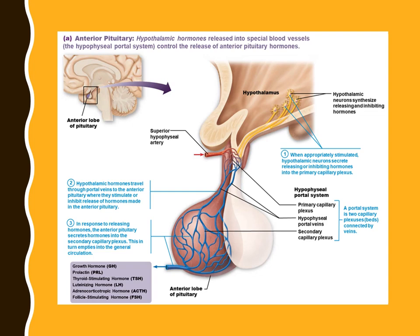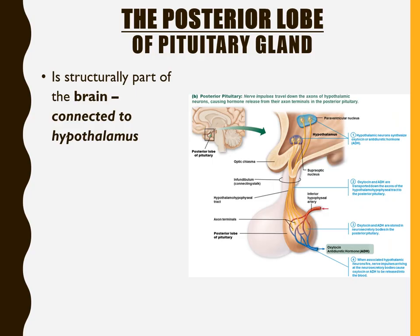The textbook image of the hypophyseal portal system shows step-by-step how those hormones stimulate the anterior pituitary through this portal system. The key function is to get hormones quickly from the hypothalamus to the anterior pituitary gland. The hormones secreted by the anterior pituitary can then go directly out into circulation to reach their target tissues.